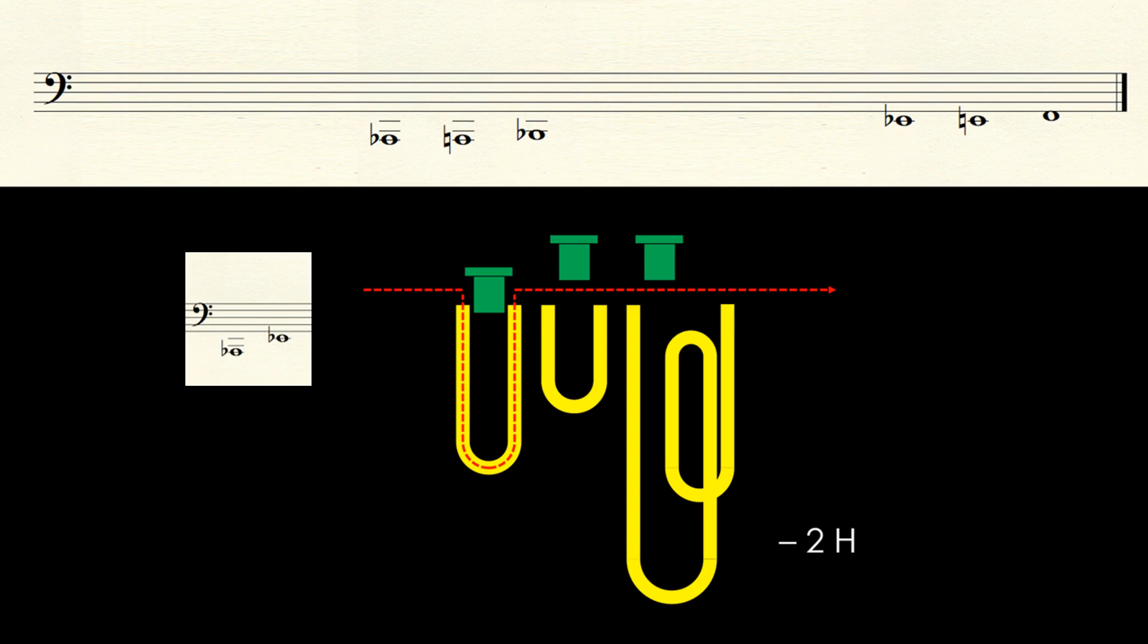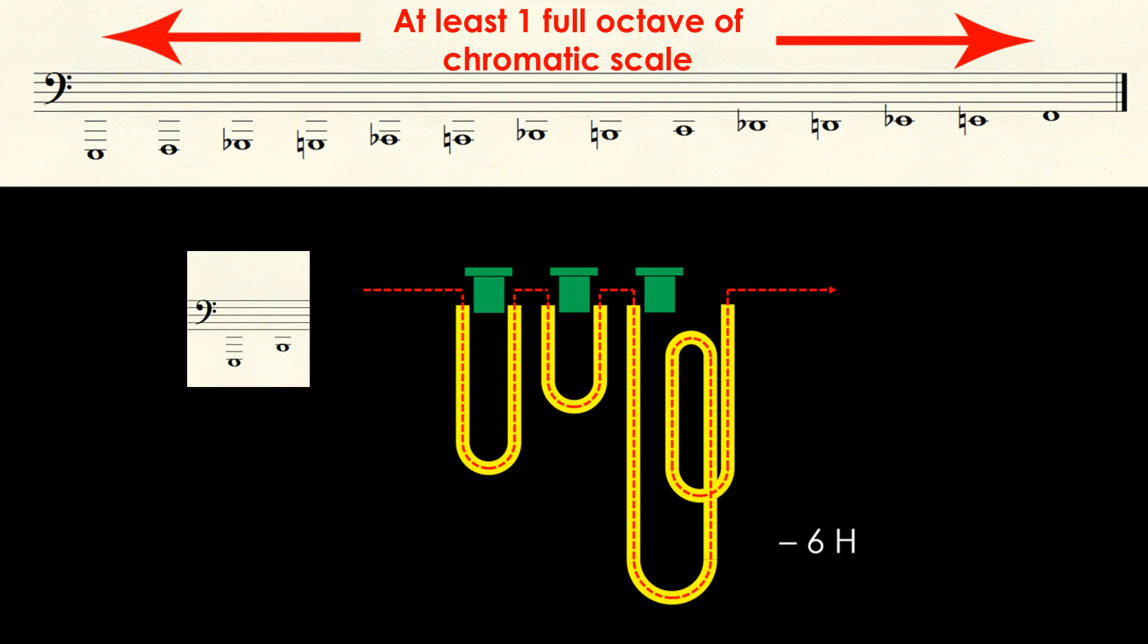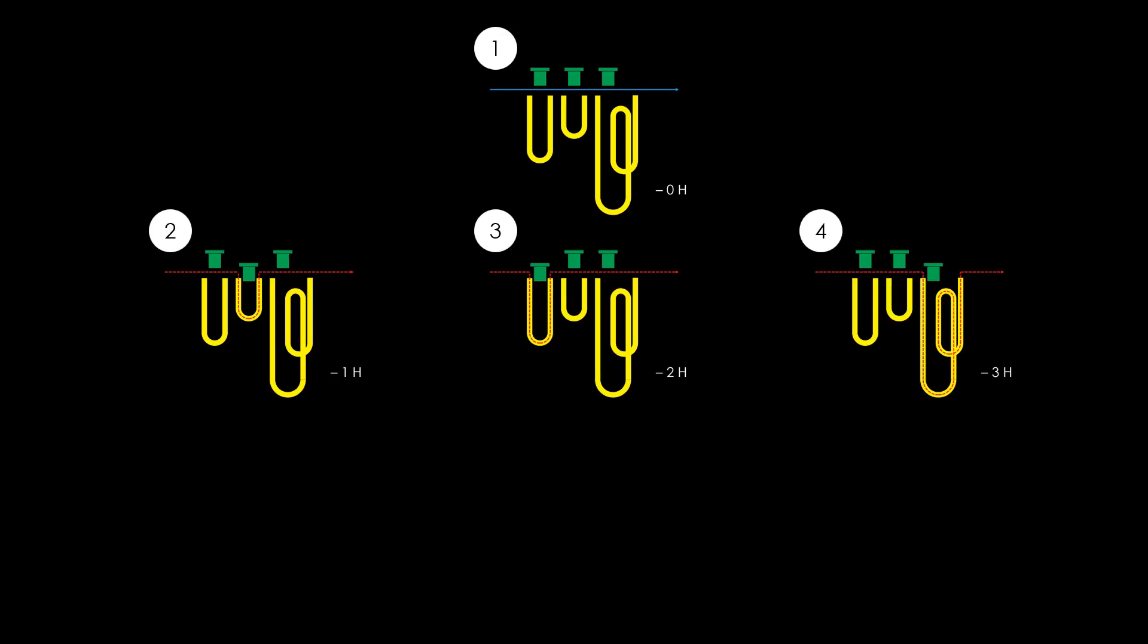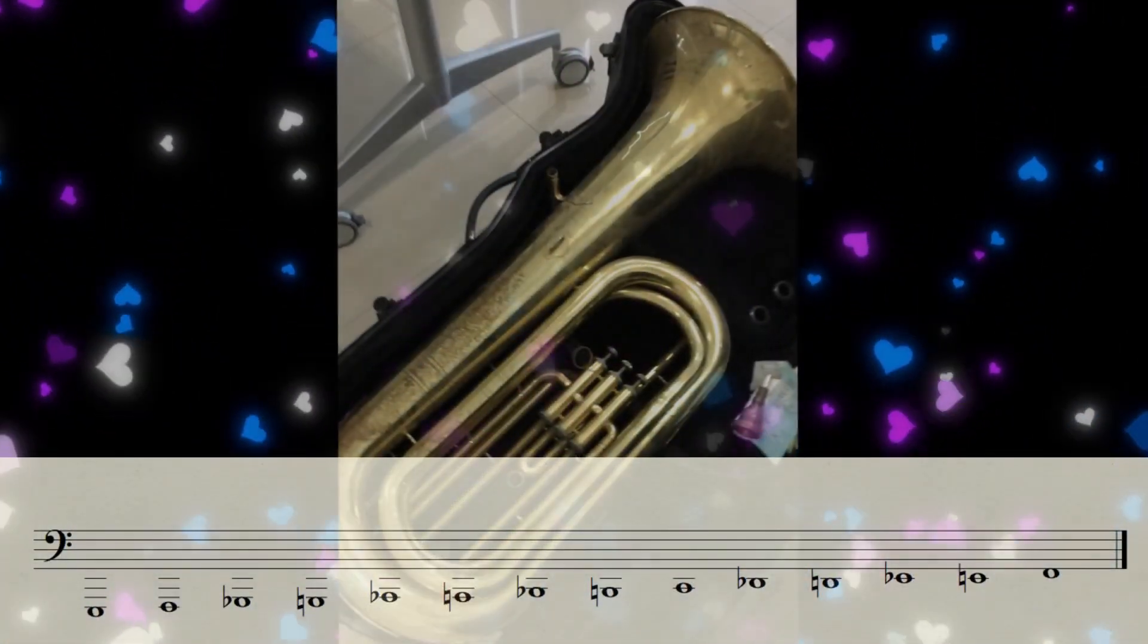Adding that to the natural harmonic series as one unique configuration, we get a total of seven ways to access at least a full octave of the chromatic scale, and this makes our tuba functional and inclusive.